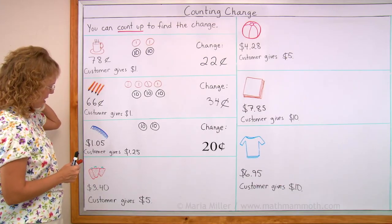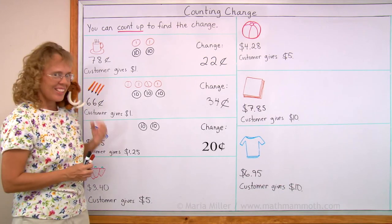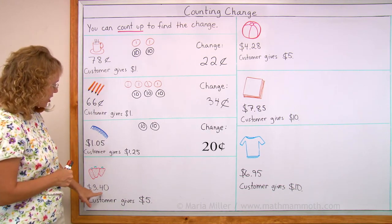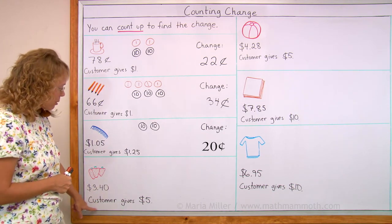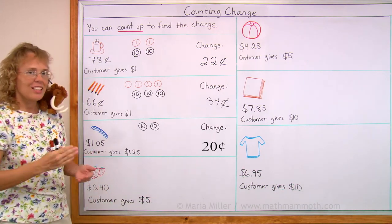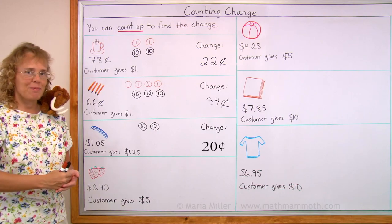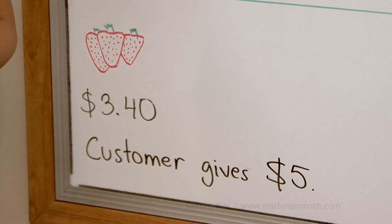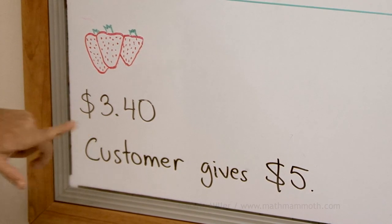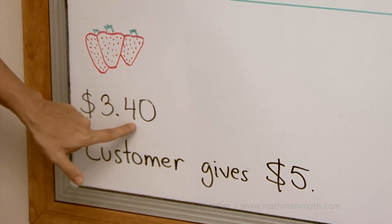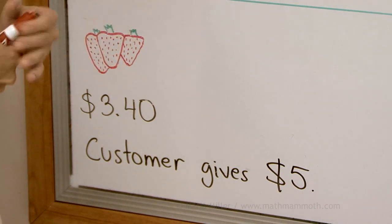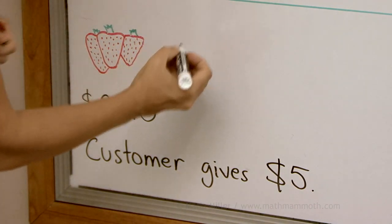Some strawberries. Matthew, are you hungry? Yeah, he's hungry for strawberries and blueberries. $3.40. Customer gives $5. So we need to count up, starting at $3.40. First, I will count up to the next whole dollar, which is $4. So from $3.40, I will add 60 cents. And that will take me to $4. Let's draw here 60 cents.